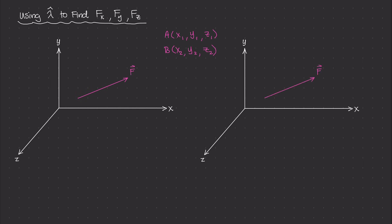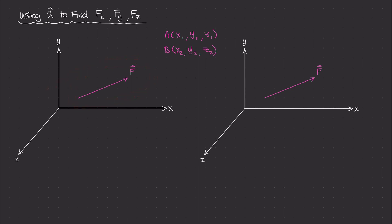In three-dimensional space, we use the unit vector lambda to describe the orientation of the force vector F. To figure out how we can use lambda to determine the three different components of F using the two points that orient that force, I'm going to look at this diagram. Imagine for a second that we forgot about force vector F, and instead drew another vector that starts at the tail of F and ends somewhere over here.